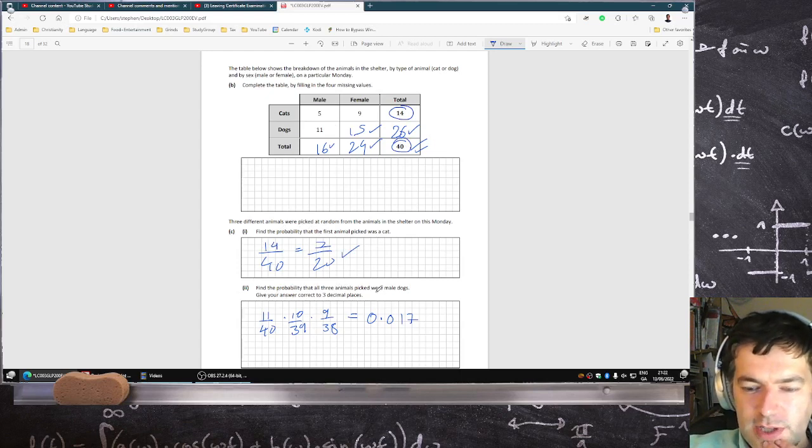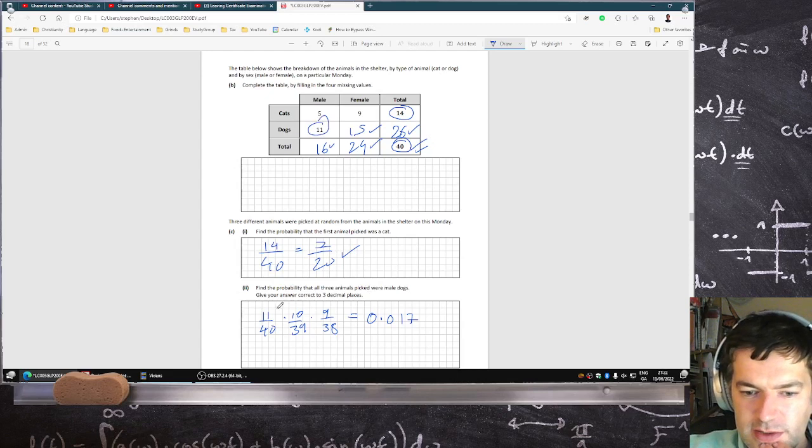Find the probability that all three animals picked were a male dog. You start off with 11 male dogs, 11 over 40, then 10 over 39, then 9 over 38, giving you an answer of 0.017.